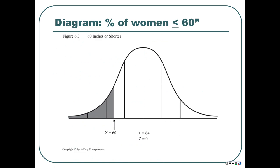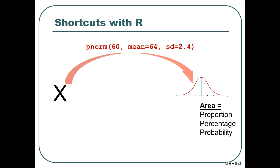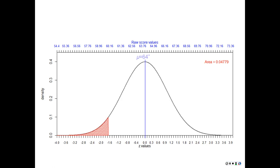Using R: pnorm(60, mean=64, sd=2.4). We don't say lower.tail=FALSE, so it defaults to lower tail TRUE. That gives us 0.04779. So about 4.8% of women are 60 inches or shorter.